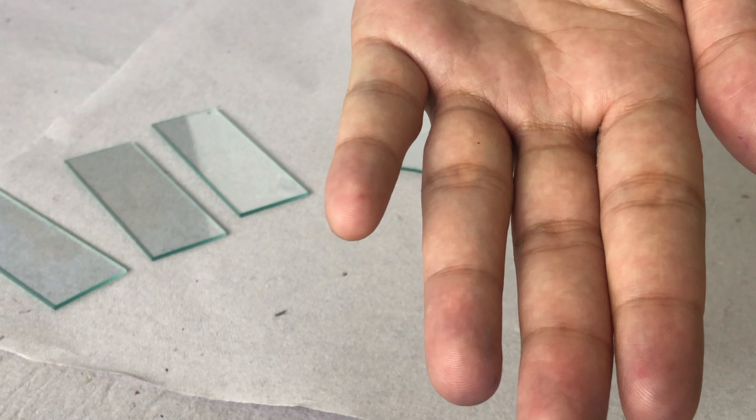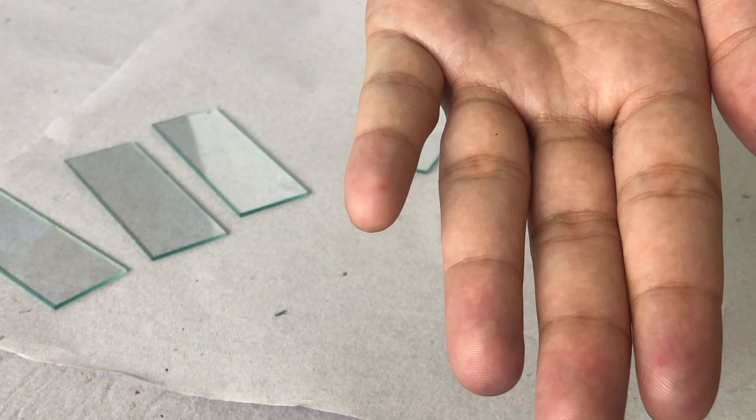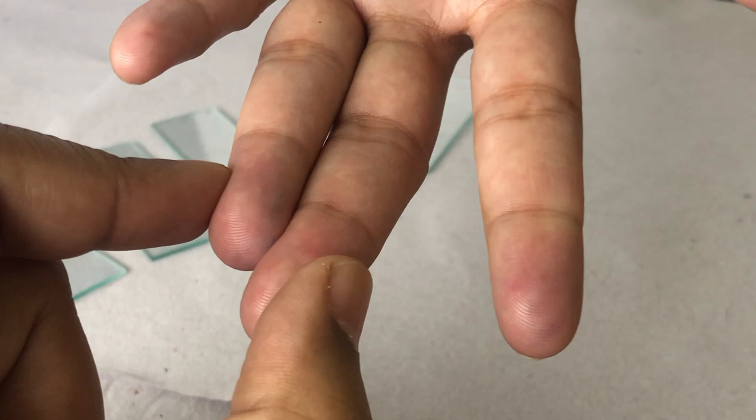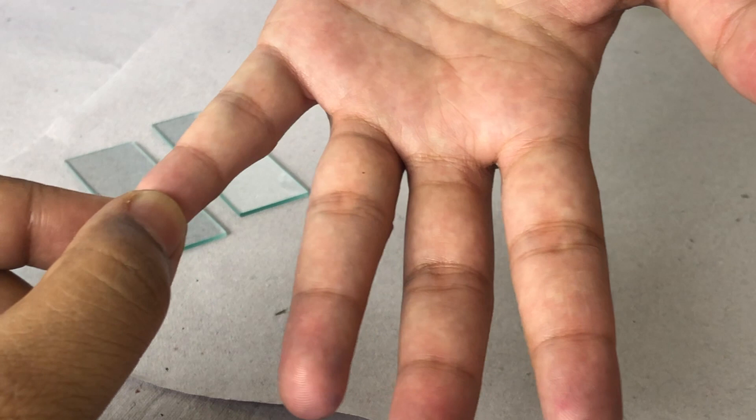For making the smear, we need blood. We can get blood by pricking the finger. For pricking the finger, we need to ensure that we use only these two fingers. We cannot use a thumb and we cannot use the little finger.